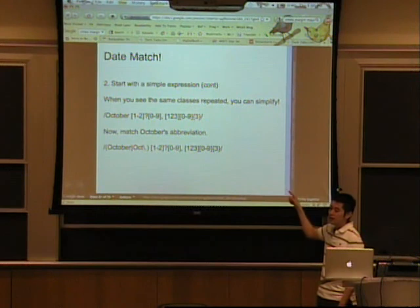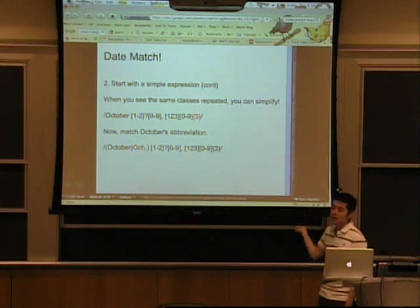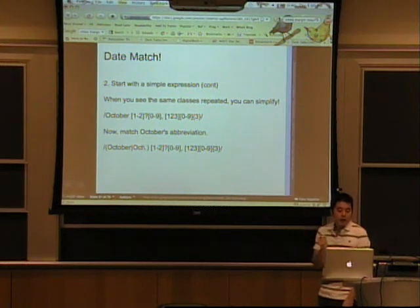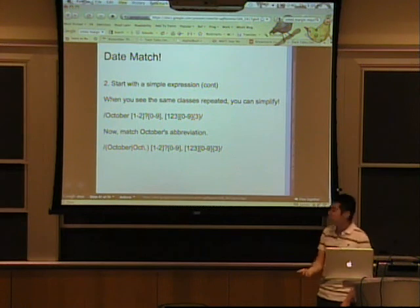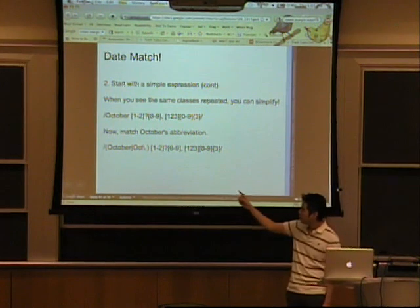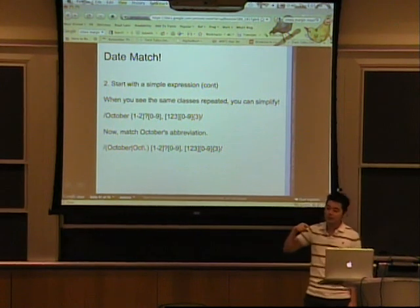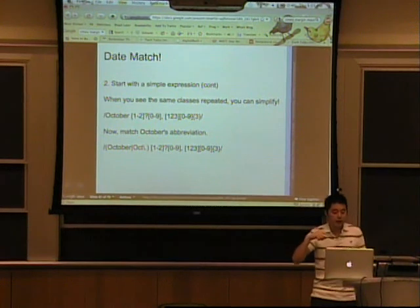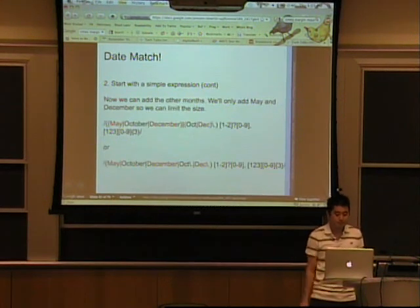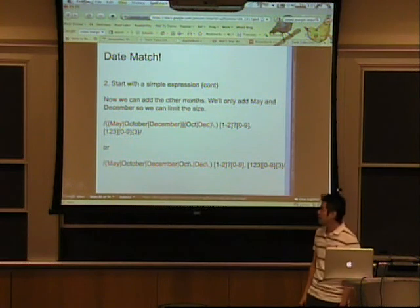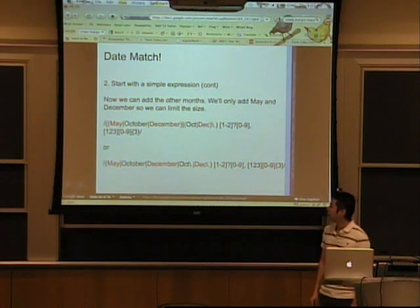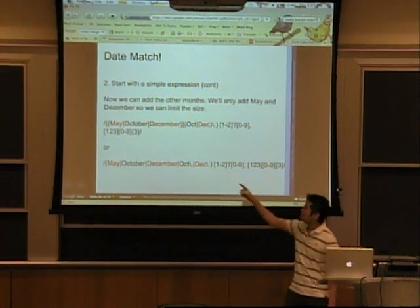We can simplify that to just having a {3} because that pattern was repeated three times. And then we can match October's abbreviation—we just add a group and an alternation operator to match October's abbreviation. And then we can add more months: May, December. And you see here we use the whole month names here and abbreviated here.